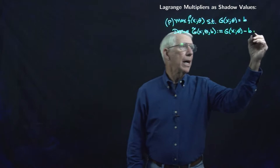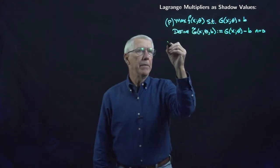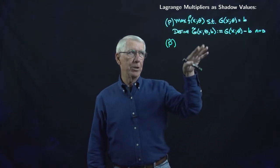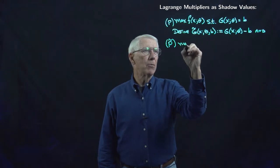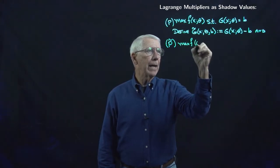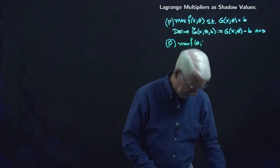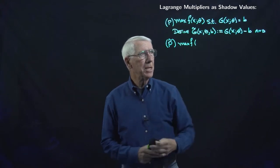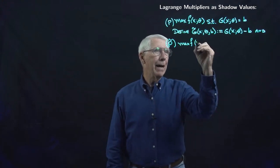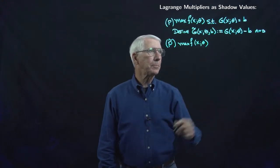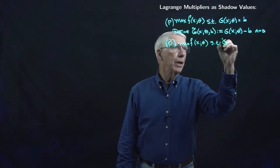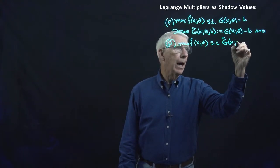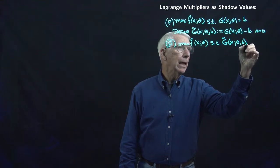Now let's define a new decision problem — it's really the same decision problem, but we're writing the parameters slightly differently. That's going to be: maximize f of x and theta, subject to g-tilde of x, theta, and b equals 0. Because clearly, if g of x and theta equals b, then g-tilde equals 0.